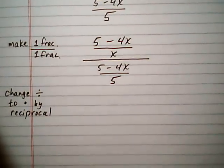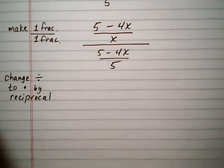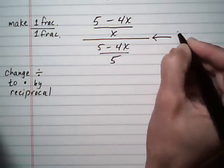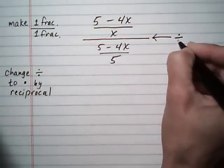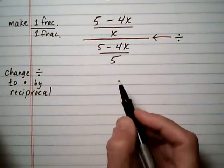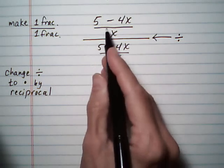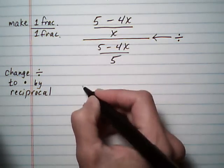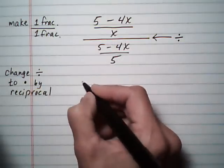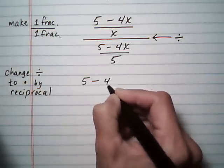Now we're going to change division to multiply by the reciprocal. And remember, any fraction bar is really a division symbol. It's telling us to divide, so we're going to take 5 minus 4x over x, and instead of divided by the bottom, we're going to multiply it by the reciprocal of the bottom.